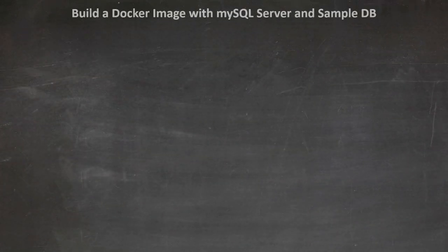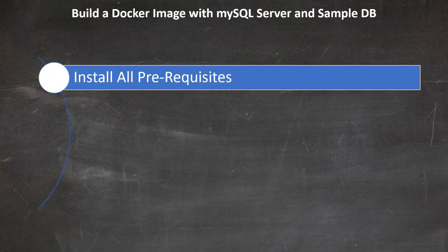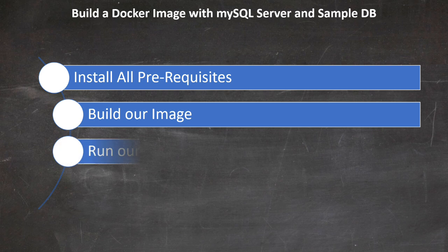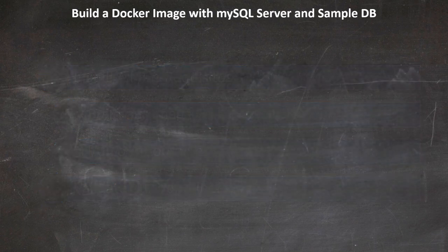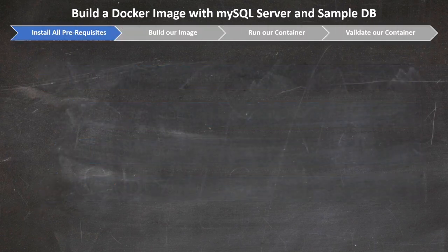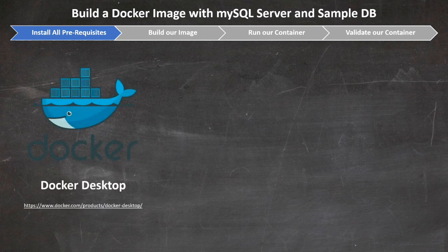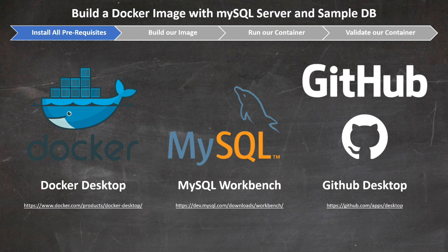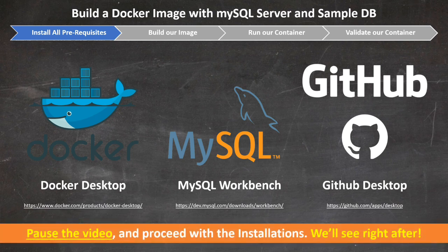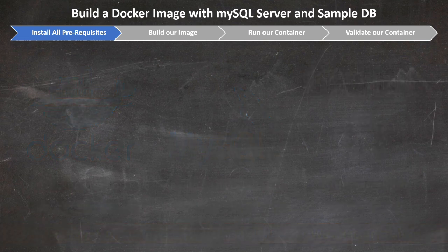In the next few minutes we're going to install all the prerequisites we need, build our image, run our container, and validate that everything works as expected. We have three critical prerequisites to install: Docker Desktop, MySQL Workbench, and GitHub Desktop, since all the code needed for this exercise is available via GitHub. All the links are listed in the video description — please pause the video, proceed with the installations, and I'll see you soon.